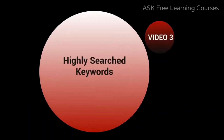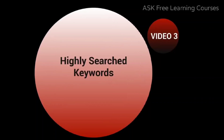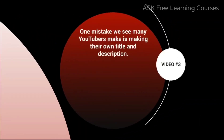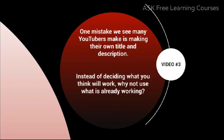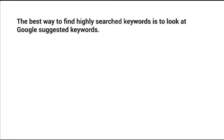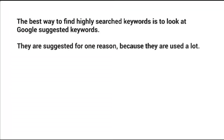Hello and welcome to video number three. Let's talk about highly searched keyword terms and how to figure out your main keyword and sub-keywords. One mistake many YouTubers make is simply making up their own title and description. Instead of deciding what you think will work, use what is already working. Do simple keyword research — it won't take much time — so you can rank on the right keywords. The best way to find them is to look at Google's suggested keywords.